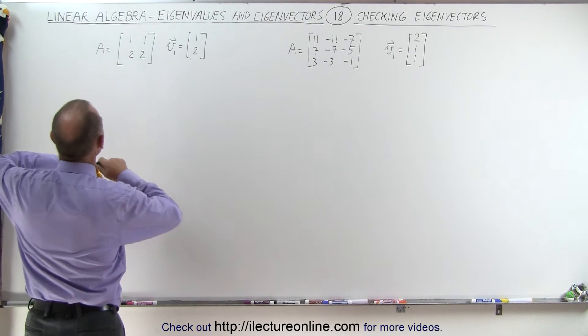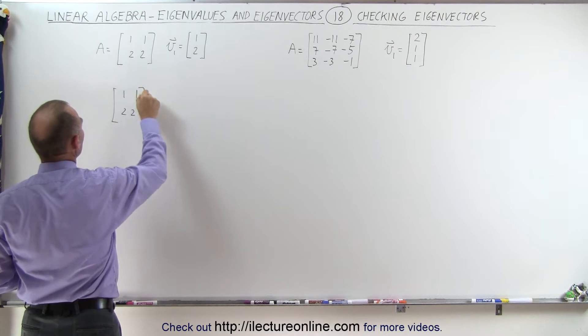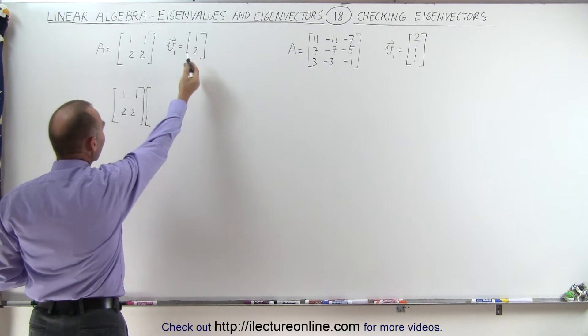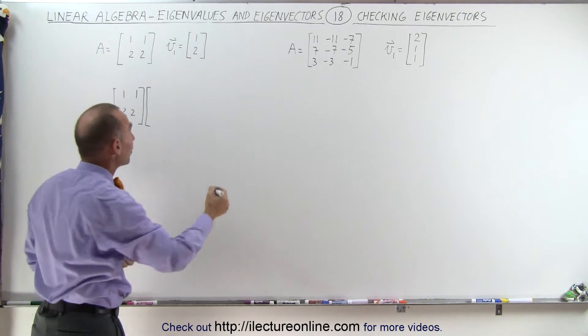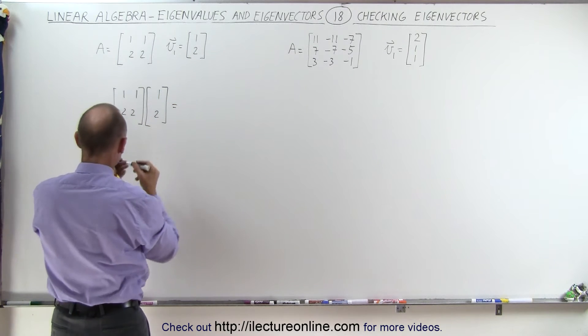What we're going to do is multiply our original matrix 1 1 2 2, it's a simple matrix here, times the eigenvector that we found in a previous video, 1 and 2, and let's see what we get when we multiply these two together.